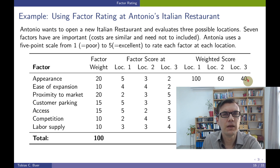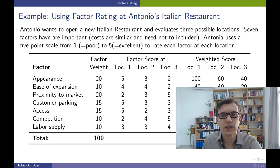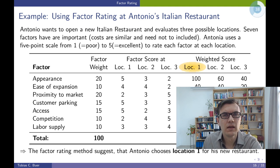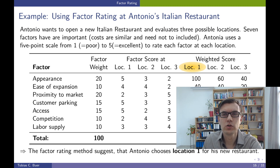Now we are almost done. Let's sum up the weighted scores for each location. Location one scores 380, location two scores 305, and location three scores 340. According to the scale where 5 is the highest, the location with the highest point value should be selected. So Antonio should, if he is only looking at the Factor Rating Method, select location number one as his future restaurant.